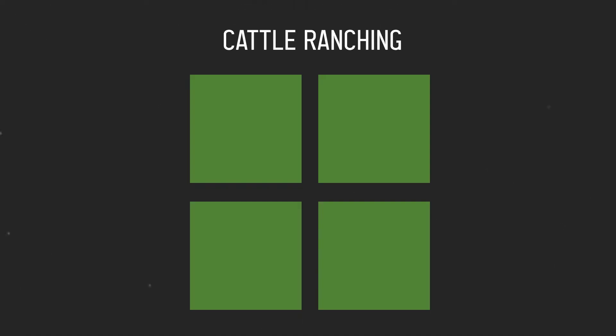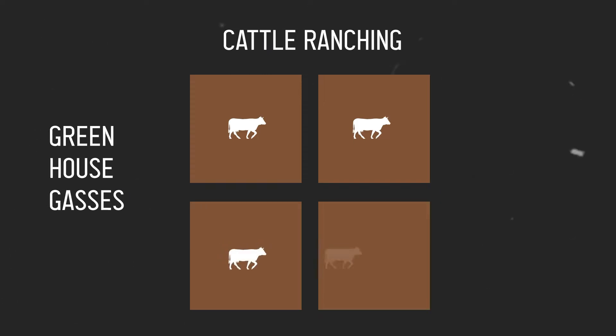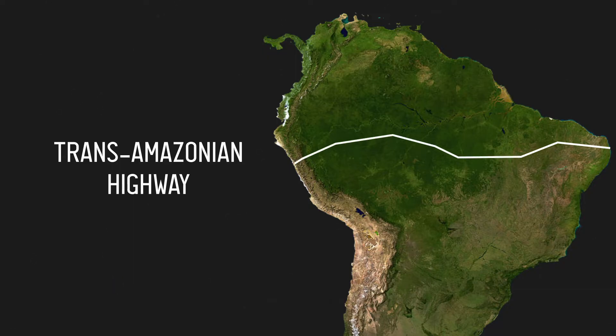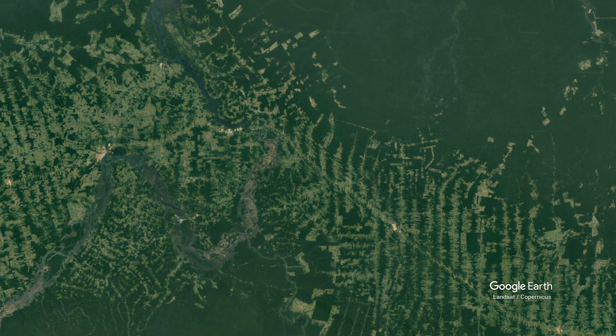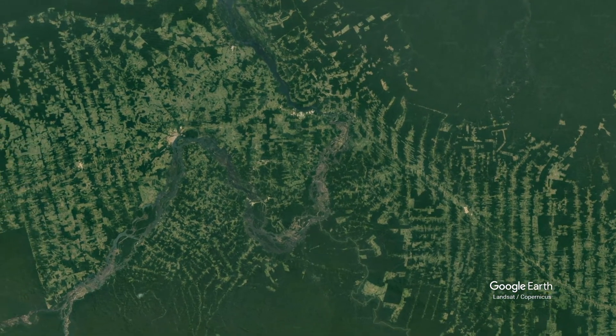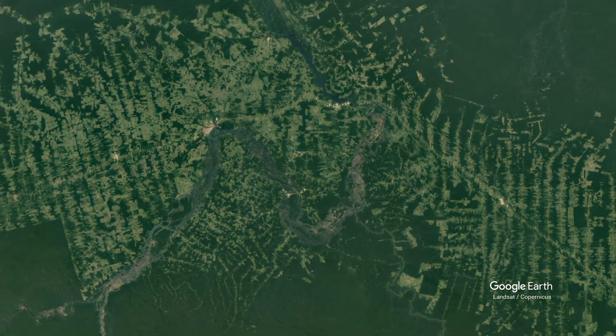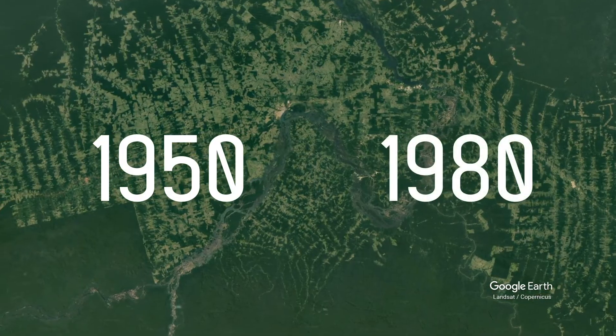Another major cause of deforestation in rainforests is cattle ranging — the process where forests are cleared to raise cattle, which also contributes to the emission of greenhouse gases through the release of methane. The Trans-Amazonian Highway in 1970 was built to connect Brazil with the cattle ranges inside the Amazon. There was a 3-fold increase in the area of pasture and ranch lands between 1950 and 1980.